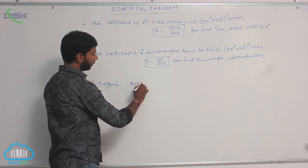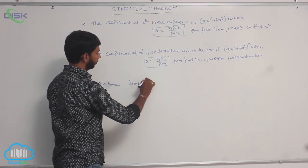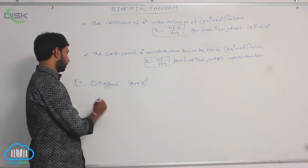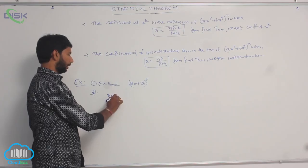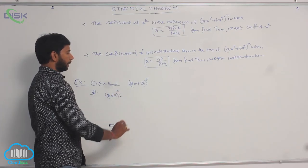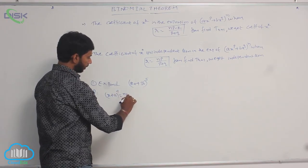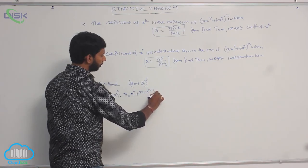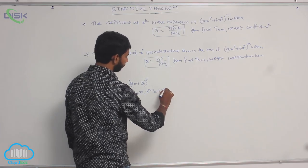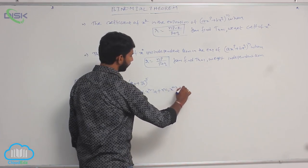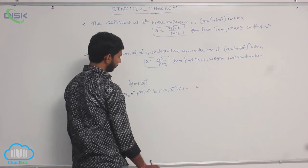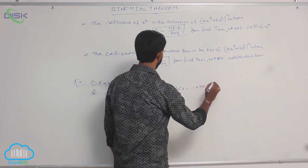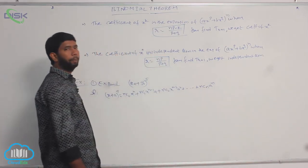Expand (2a plus 3b) whole power 5. This is of the form (x plus a) whole power n. The binomial theorem gives: nC0 times x power n, plus nC1 times x power (n-1) times a, plus nC2 times x power (n-2) times a squared, plus so on.